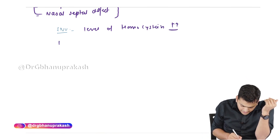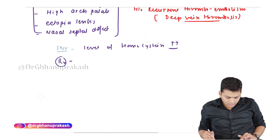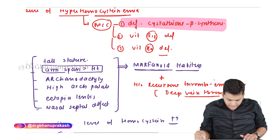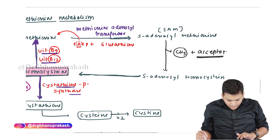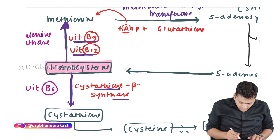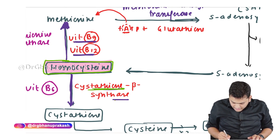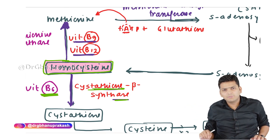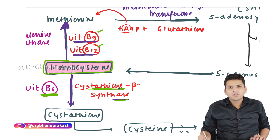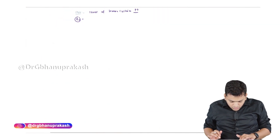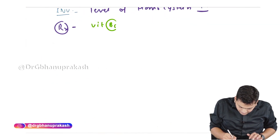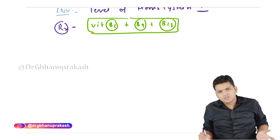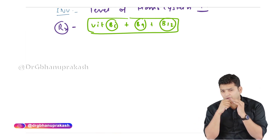It is time to treat the patient. The most common cause of hyperhomocystinemia is cystathionine beta synthase deficiency, and we do not have a synthetic form of this enzyme. The treatment is hidden in the pathway: you can give vitamin B6 supplementation so that homocysteine can exit via the cystathionine route, or give B9 and B12 supplementation for the methionine synthase route. The treatment consists of B6, B9, and B12 supplementation, all given lifelong.